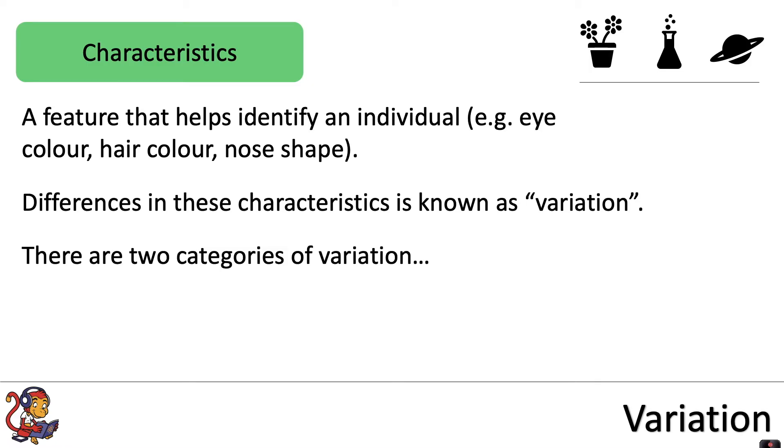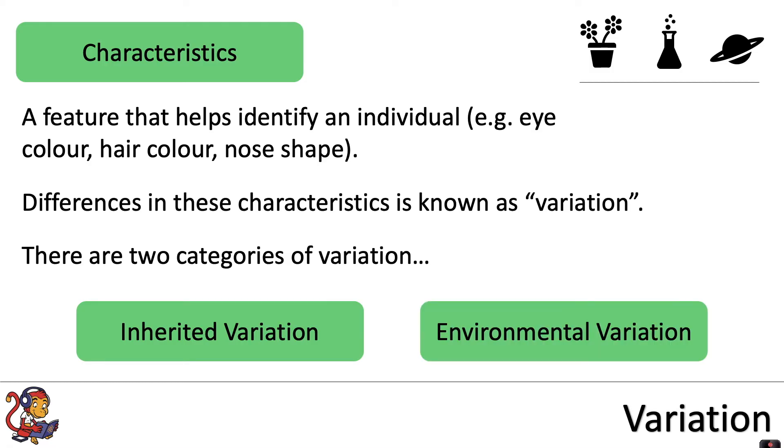There are two categories of variation: inherited variation and environmental variation. Let's look in more detail about what those mean.